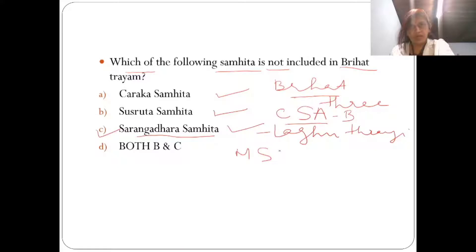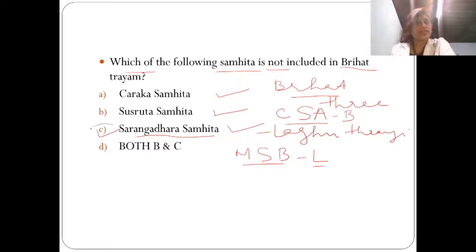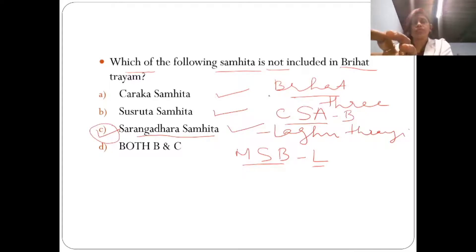Sharngadhara Samhita belongs to the Lagutrayee — the secondary three. The Lagutrayee consists of Madhavanidana, Sharngadhara Samhita, and Bhavaprakasha — MSB is Lagutrayee. So the correct answer is Sharngadhara Samhita. Brihattrayam is Charaka, Sushruta, Ashtanga Samhita; and the Lagutrayee is these three.